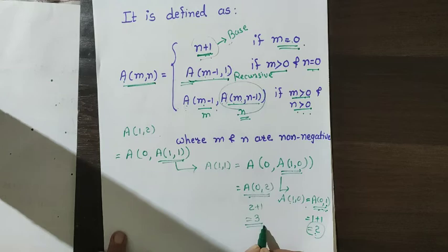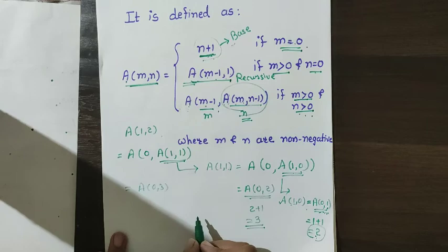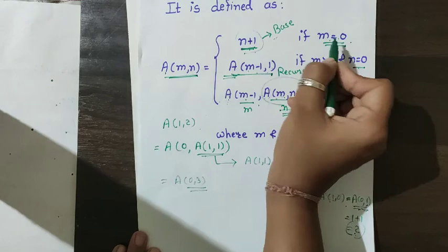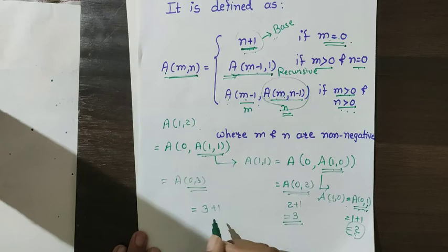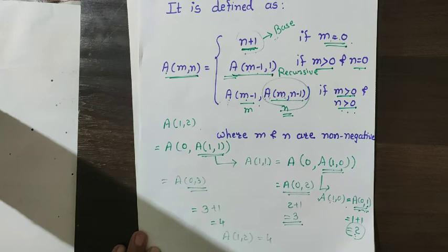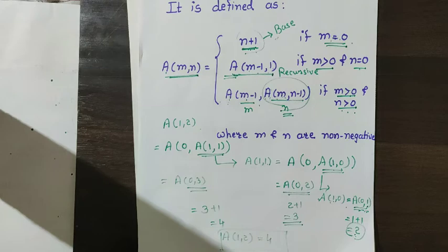Now placing 3 back gives a(0, 3). Applying the base case: n plus 1 is 3 plus 1, so my answer is 4. For a(1,2), the final answer is 4.